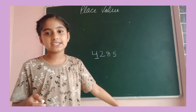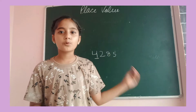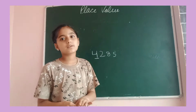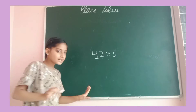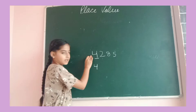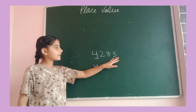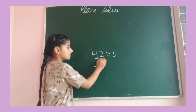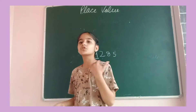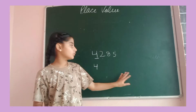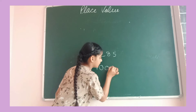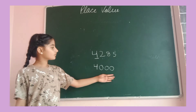Once I count the digits after 4, I get three digits: one, two, three. So there are 3 zeros. We will write the digit 4 and add 3 zeros after it. That gives us the place value of 4.